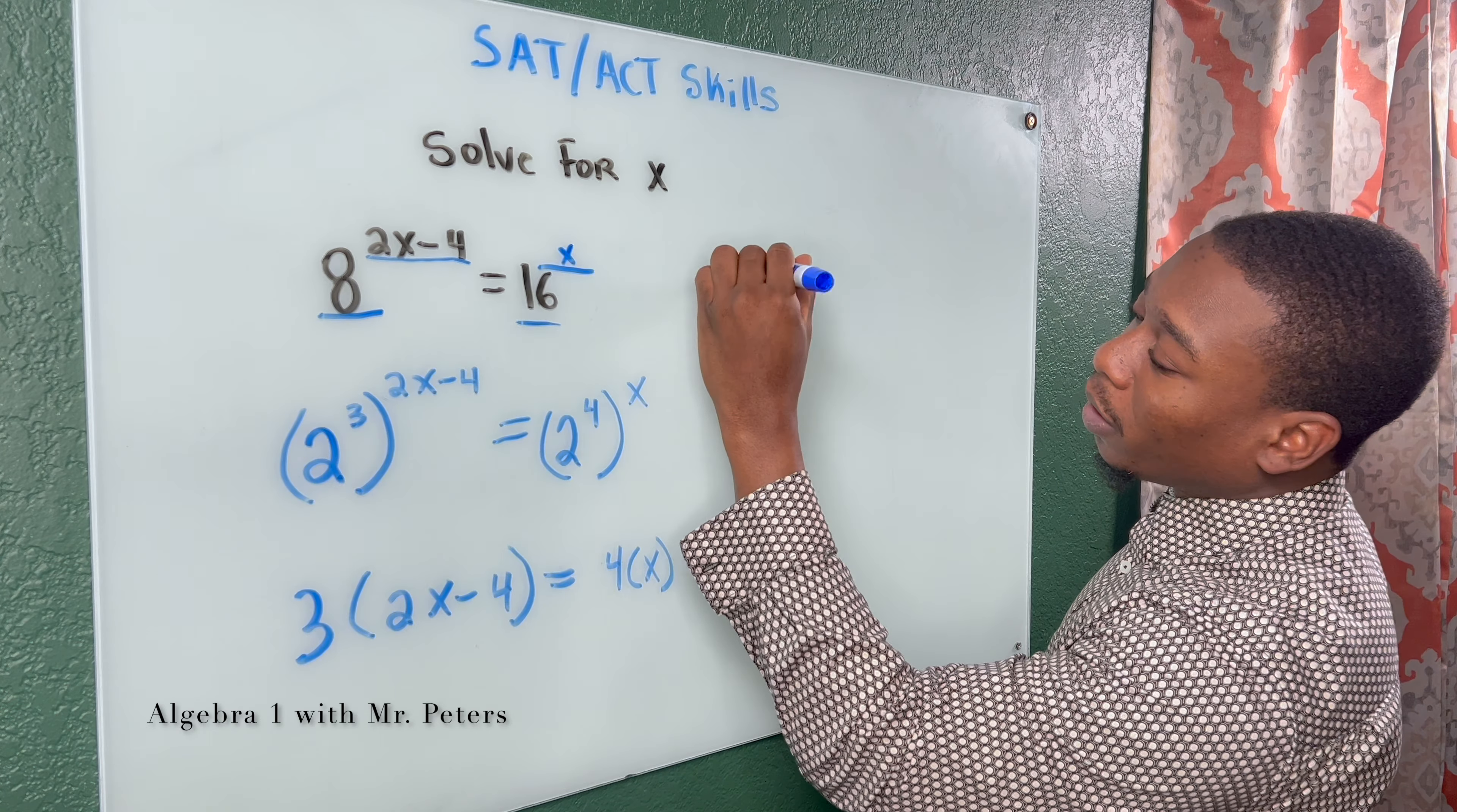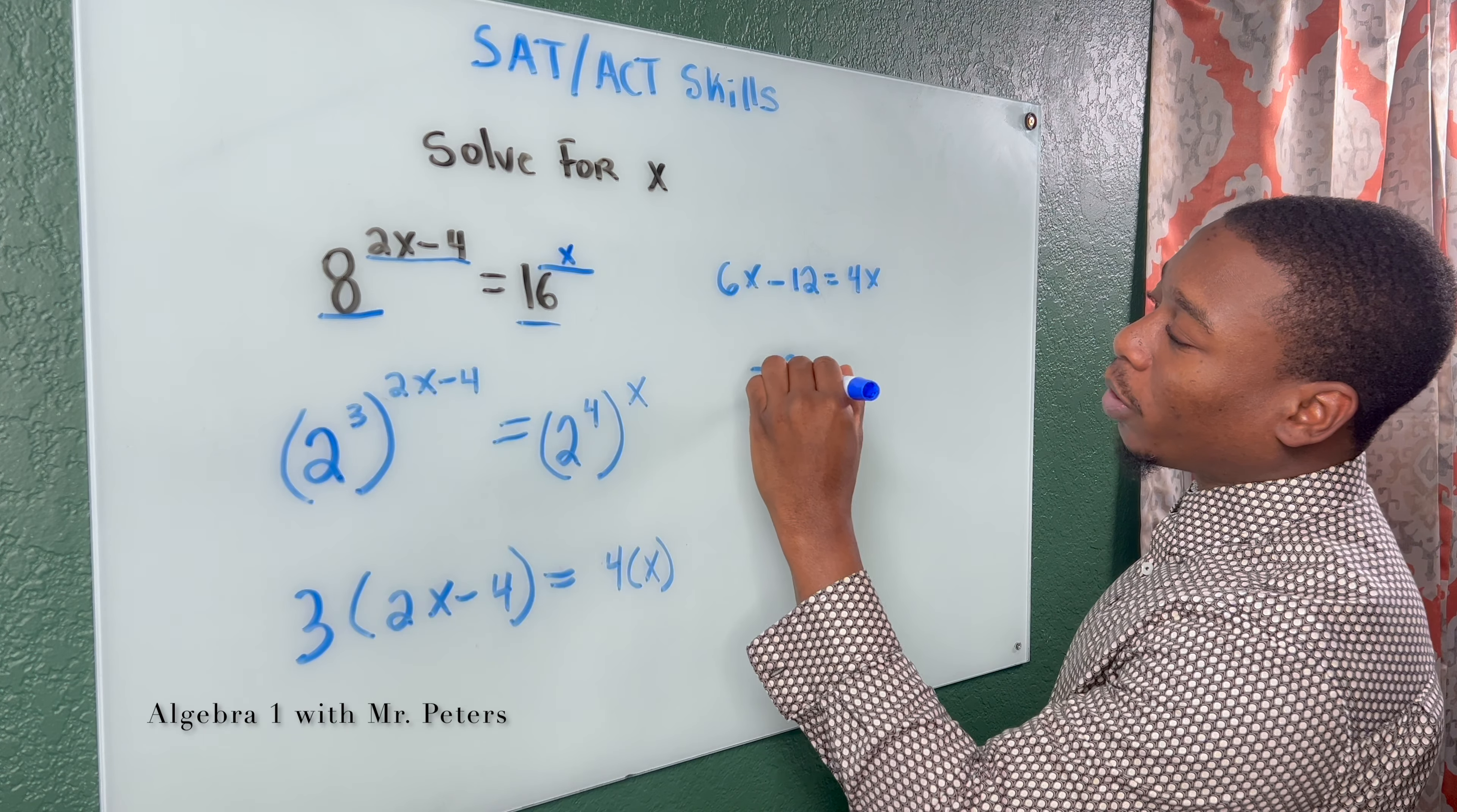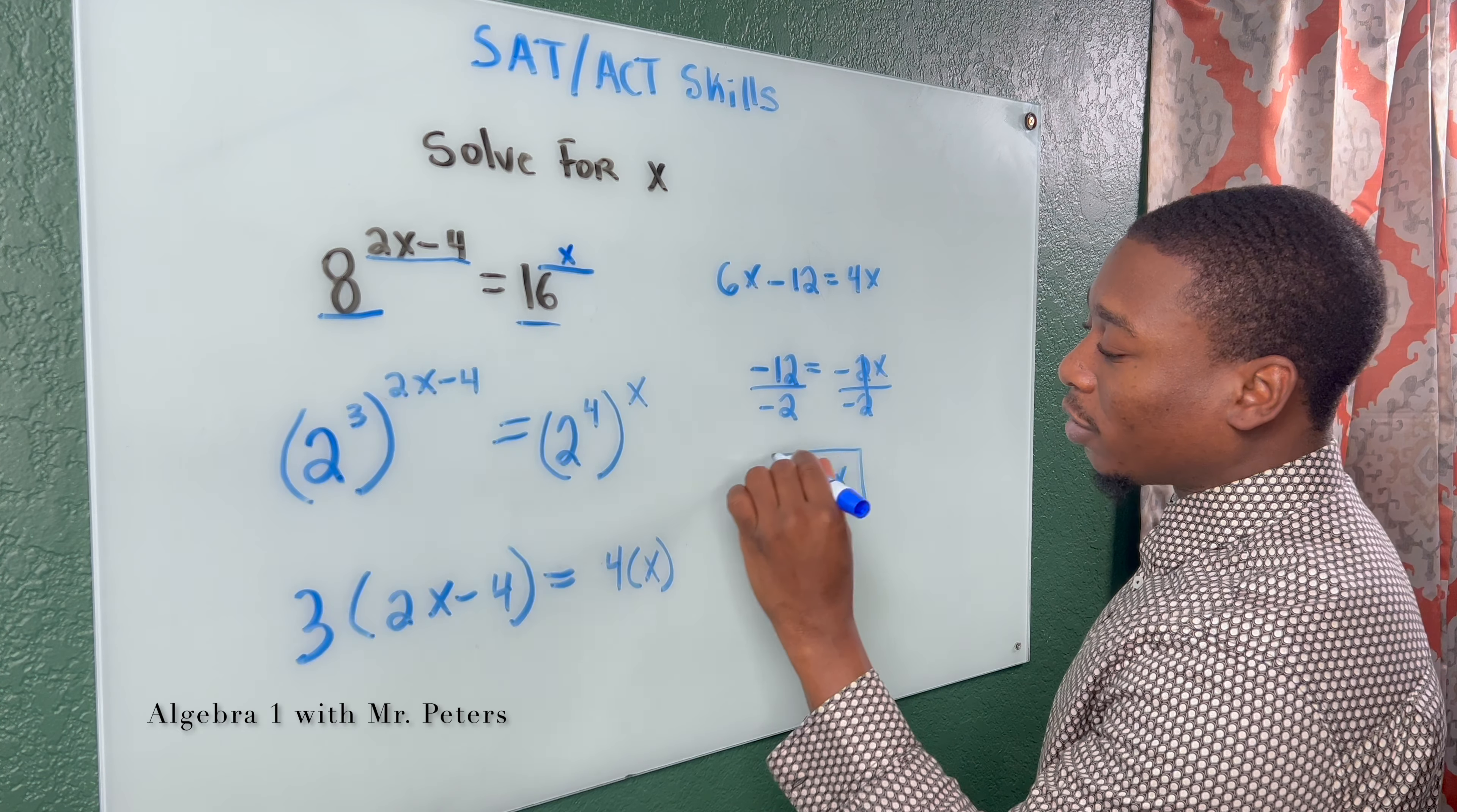So after I distribute, I'm going to get 6X minus 12 is equal to 4X. So I combine my Xs. I have negative 12 is equal to negative 2X. And once I divide by negative 2, I'm going to get 6 is equal to my answer.